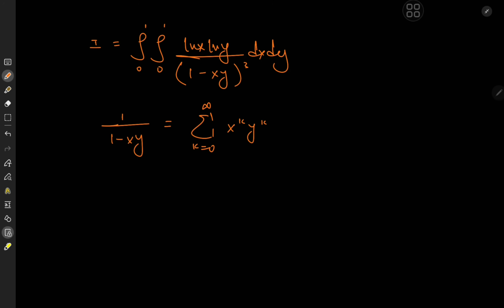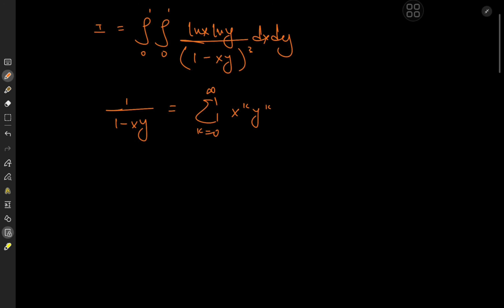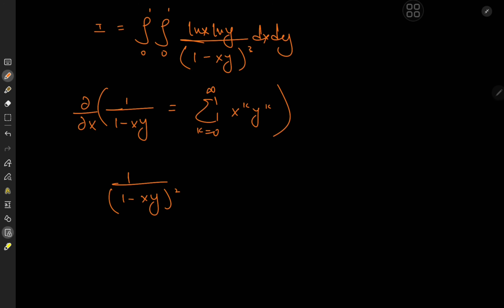That's all fine and dandy, but we're not interested in 1 over (1 minus xy) — we're interested in 1 over (1 minus xy) cubed. So why not differentiate this thing partially with respect to x? Differentiating with respect to x yields 1 over (1 minus xy) squared. The partial derivative of (1 minus xy) is negative y, so the negative signs cancel. On the right-hand side, we're left with the sum over k from 0 to infinity of k times x to the k minus 1 times y to the k.